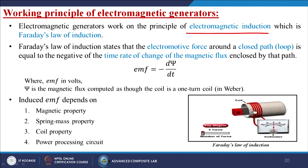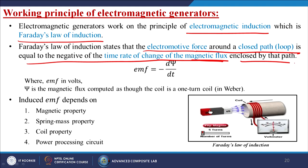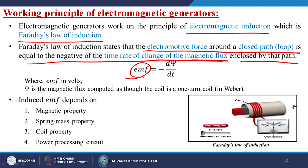What is the working principle of electromagnetic generators? Electromagnetic generators work on the principle of electromagnetic induction — Faraday's law of induction. Faraday's law of induction states that the electromotive force around a closed path or loop is equal to the negative of the time rate of change of the magnetic flux enclosed by that path. The EMF is given by EMF = −dΨ/dt, where EMF is in volts and Ψ is the magnetic flux computed as for a one-turn coil, in Weber.